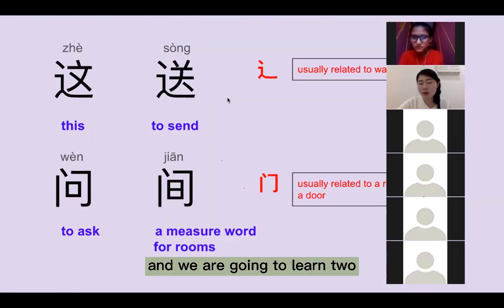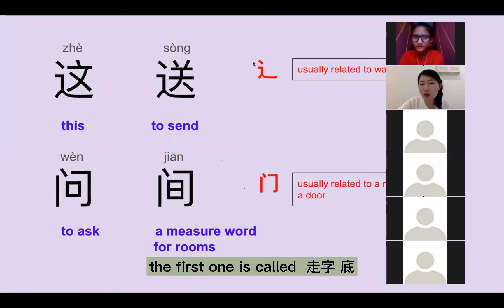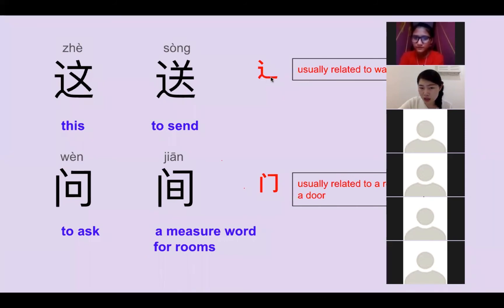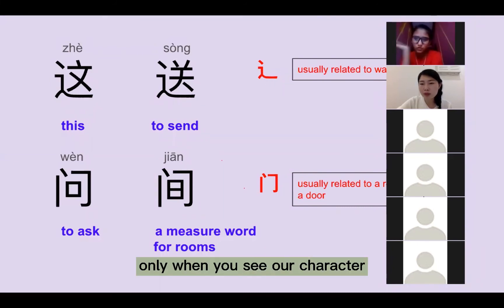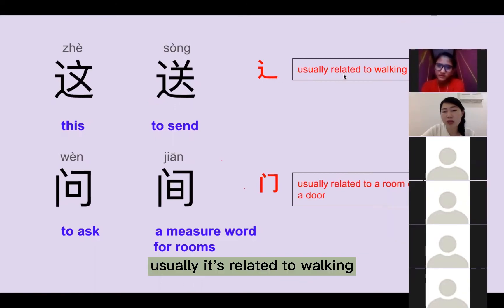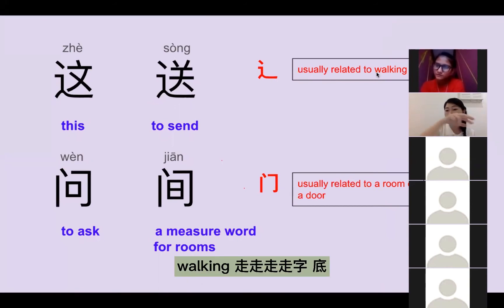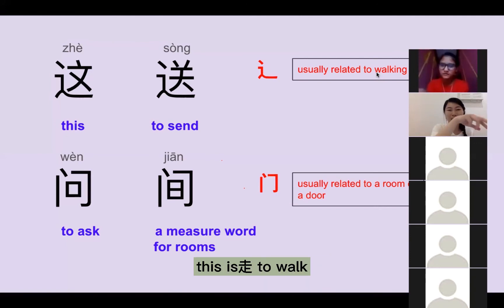今天 we are going to learn two radicals. The first one is called 走字底。Only when you see a character with 走字底, usually it's related to walking. 走 means to walk.